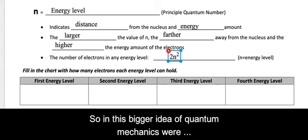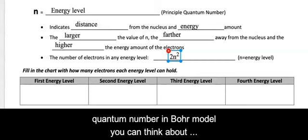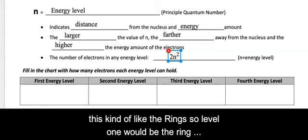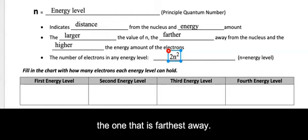So in this bigger idea of quantum mechanics, we're talking about n, which is the energy level or principal quantum number. In Bohr model, you can think about this kind of like the rings. So level one would be the ring closest to the nucleus and level seven, for instance, would be the one that is farthest away.